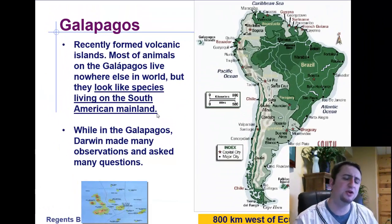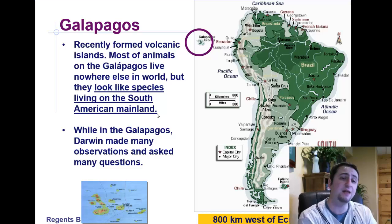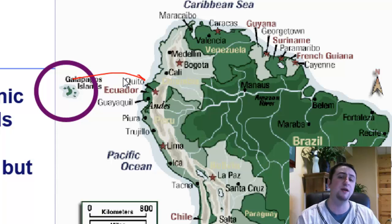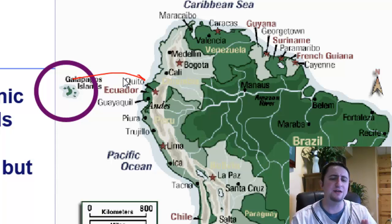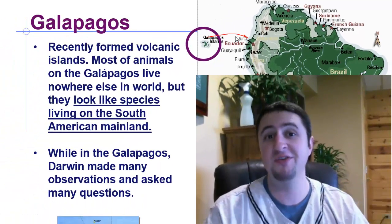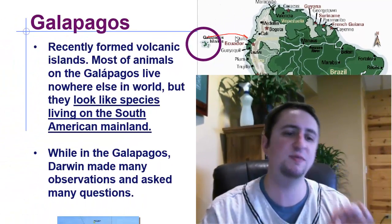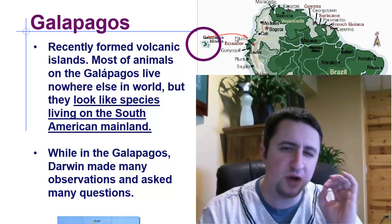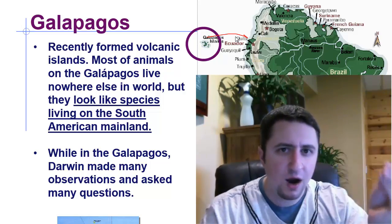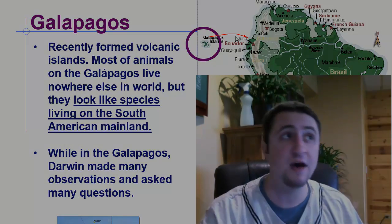A little bit of information about the Galapagos Islands: they are volcanic islands and they are off the coast of Ecuador. Here's the Galapagos Islands and here's Ecuador — there's roughly about 500 miles separating that distance. But the Galapagos Islands are home to species of animals and plants that exist nowhere else on Earth. There are some species that are very unique to just those specific islands. And so while Darwin was there, he sort of made some observations and asked many questions, like why are those animals and plants only found in the Galapagos Islands?